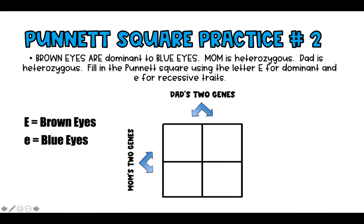We start by defining: capital E equals brown eyes (dominant) and lowercase e equals blue eyes (recessive). Mom is heterozygous so she has one dominant and one recessive — instructions for both brown and blue eyes — and so does dad. Now that we have their four genes on the Punnett square, we fill it in by bringing one gene from mom and one from dad into each square.